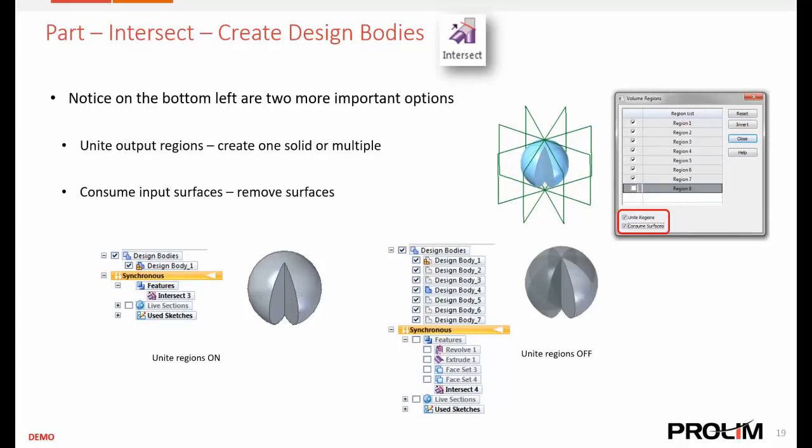When consumed surfaces and unite regions are both turned on, we get one design body with no more surfaces listed in the Pathfinder. If turned off, we have multiple design bodies listed and we still see surfaces in the Pathfinder. Let's go ahead and take a look at this inside of Solid Edge 2019.